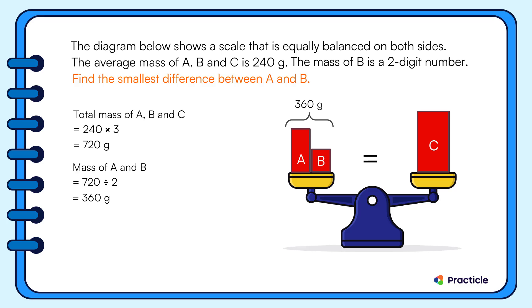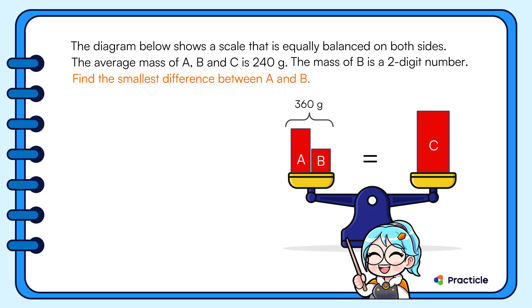Now comes the part where we need to find the smallest difference between A and B. How do we do that? Since we want to find the smallest difference, do you think we want B to be as small as possible or as big as possible? B should be as big as possible, right? And what's the greatest two-digit number that you can think of? I hope you said 99.